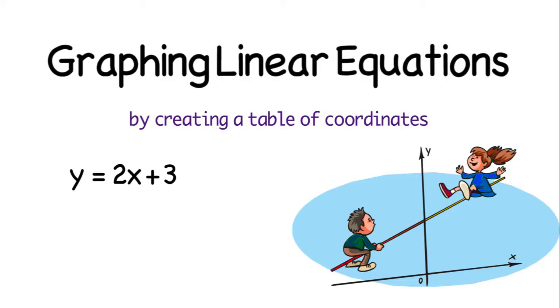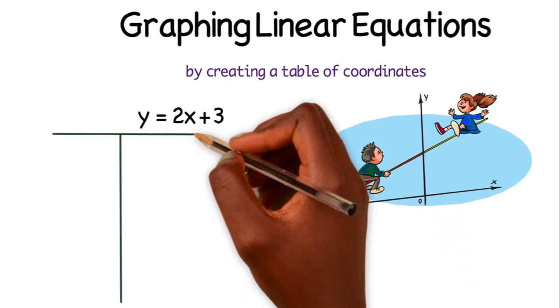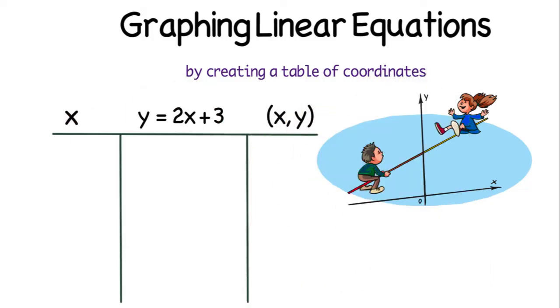We're going to start off by making a table because the coordinates will consist of x and y values that are paired together. In our table, we have not been given any x values or y values. However, because the equation is in the form y equals 2x plus 3, it's easier for us to choose x values and then use those x values to find the y values that will be paired with it.